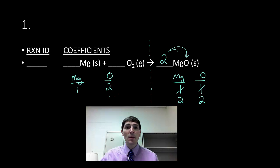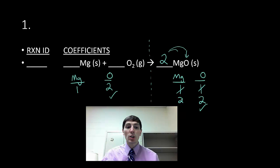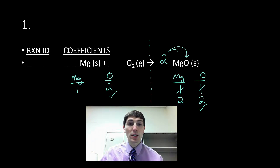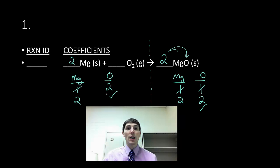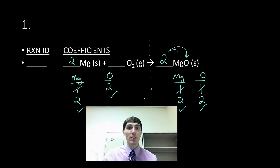What this did is now my oxygens are balanced, but my magnesium has become unbalanced. So I have to go to step two again and add more coefficients to balance the numbers out. I look at the left-hand side — I need twice the magnesium — so I put a two out in front, update my chart. Now I have two magnesium on both sides. This recipe is balanced; I have the same number of atoms of each type on both sides of the equation.